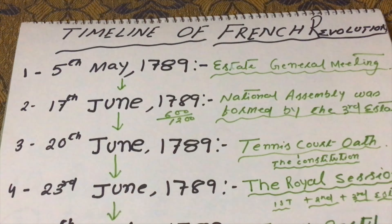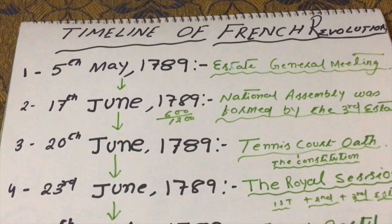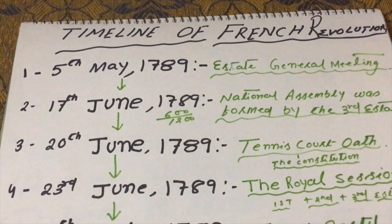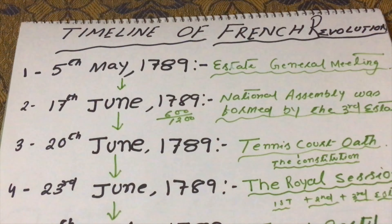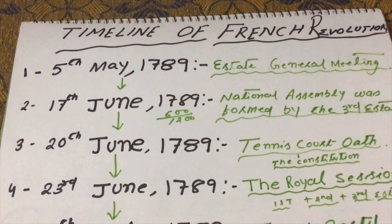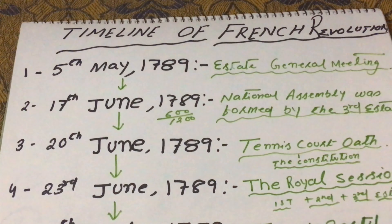On 20th June 1789, the commoners went to their hall to hold a meeting, but they were denied entry by the royal army. There were 745 members in the National Assembly — all commoners — and these 745 members were denied the right to sit and discuss in their hall in the royal palace. So they decided to hold their meeting in a nearby tennis court.